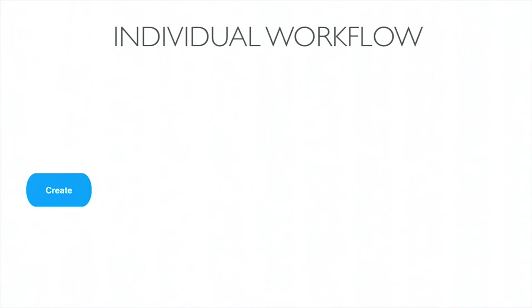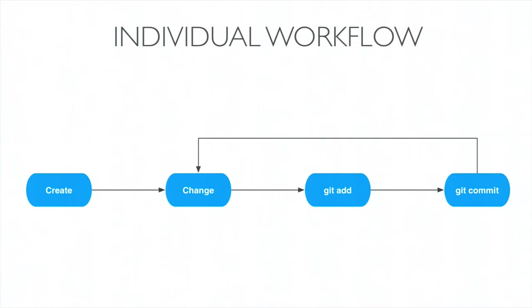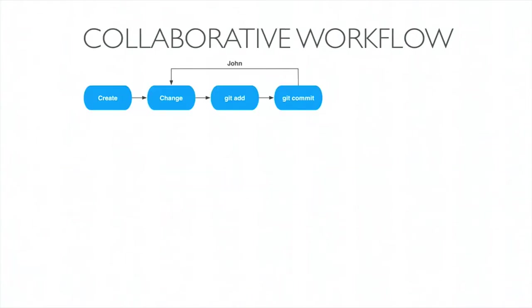The lifecycle of a file for an individual workflow always follows the same process. First, the file gets created. Then you change that file — that could be adding code, or changing permissions. Git will pick up any kind of state change to that file. Then you git add the file to the staging area, and then you commit that change into version control. At this point your working tree returns to blank — no changes. Then the process starts again: change a file, add it, commit it. That never changes.